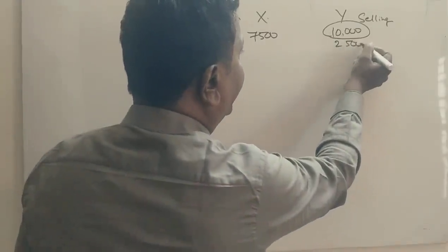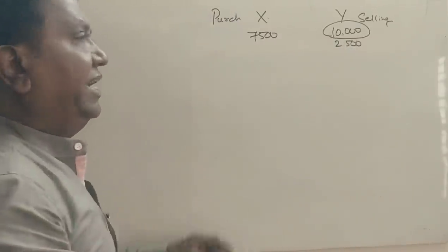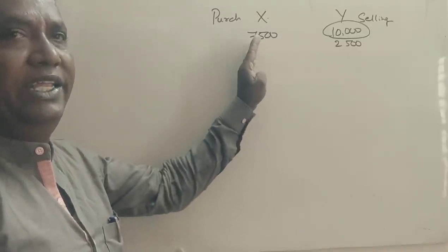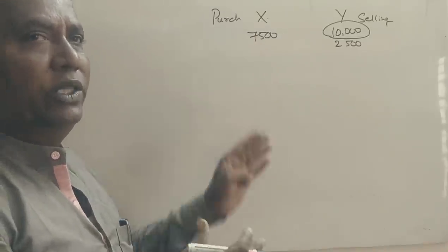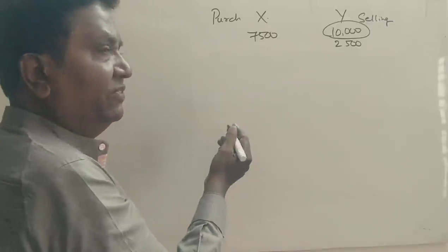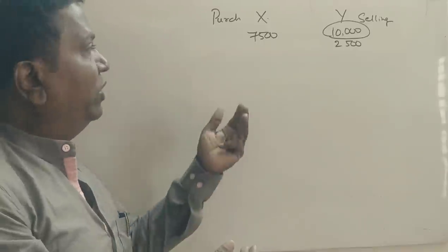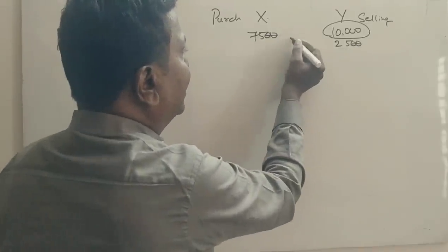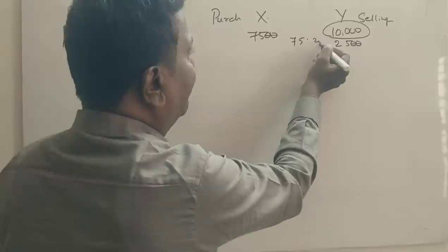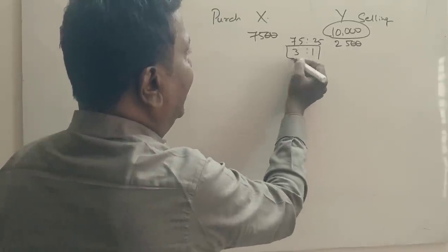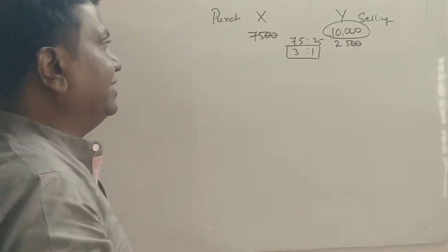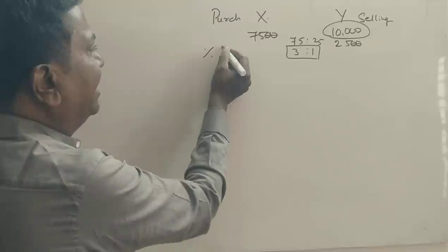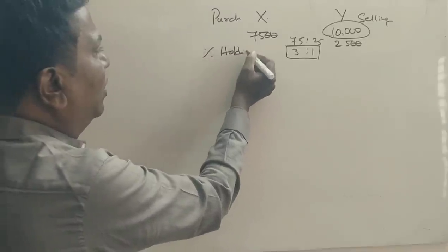Now, the remaining 2,500 shares are left. X company holds Y company shares — S2 holding, S2 shares, which is 7,500. The ratio is 7,500 to 2,500, that is 3 is to 1. These are the holding ratios.